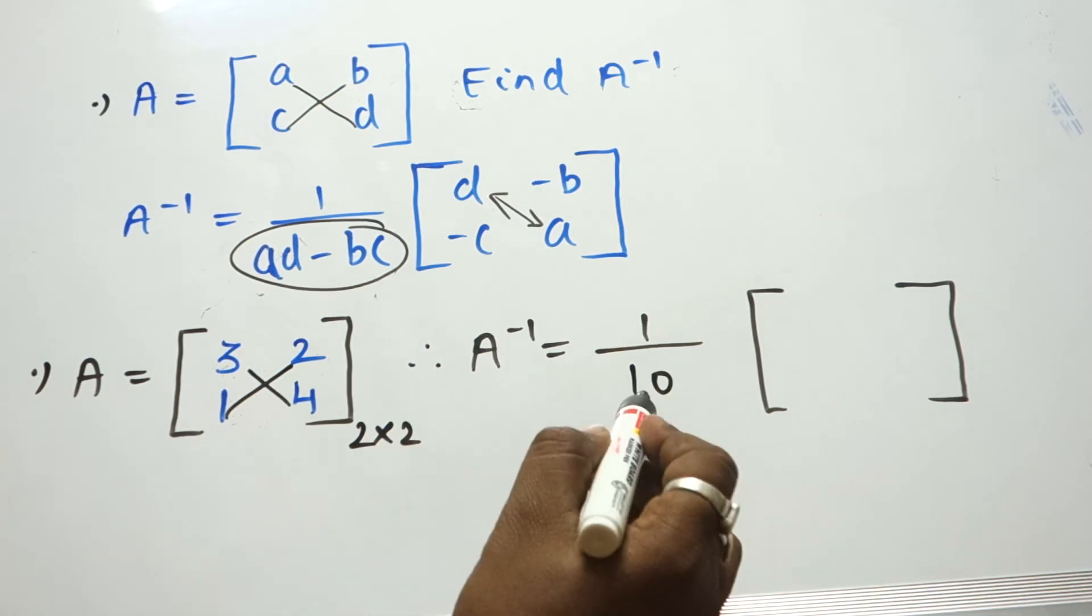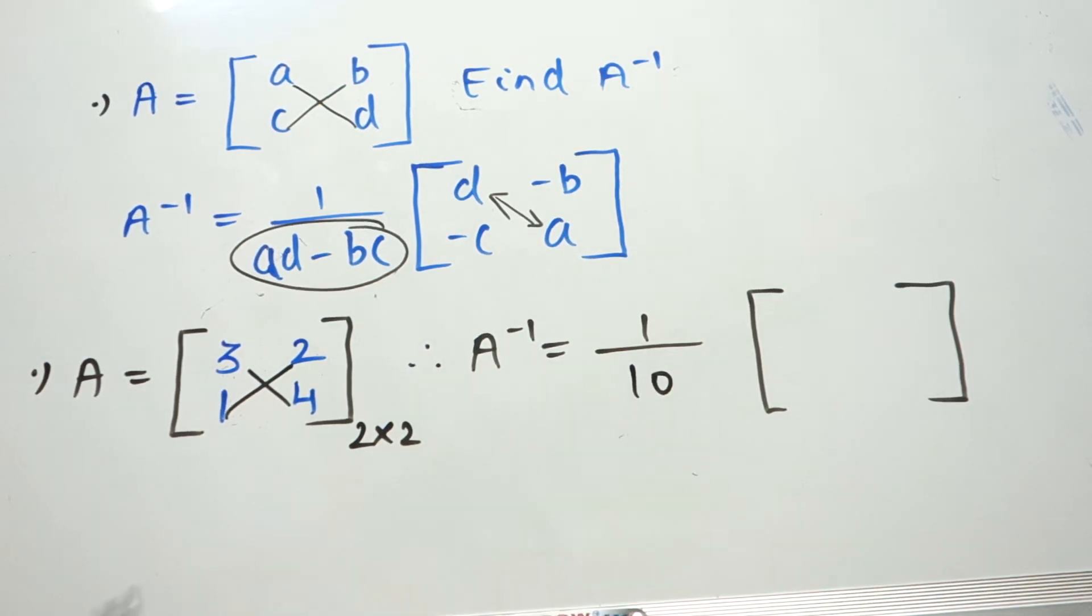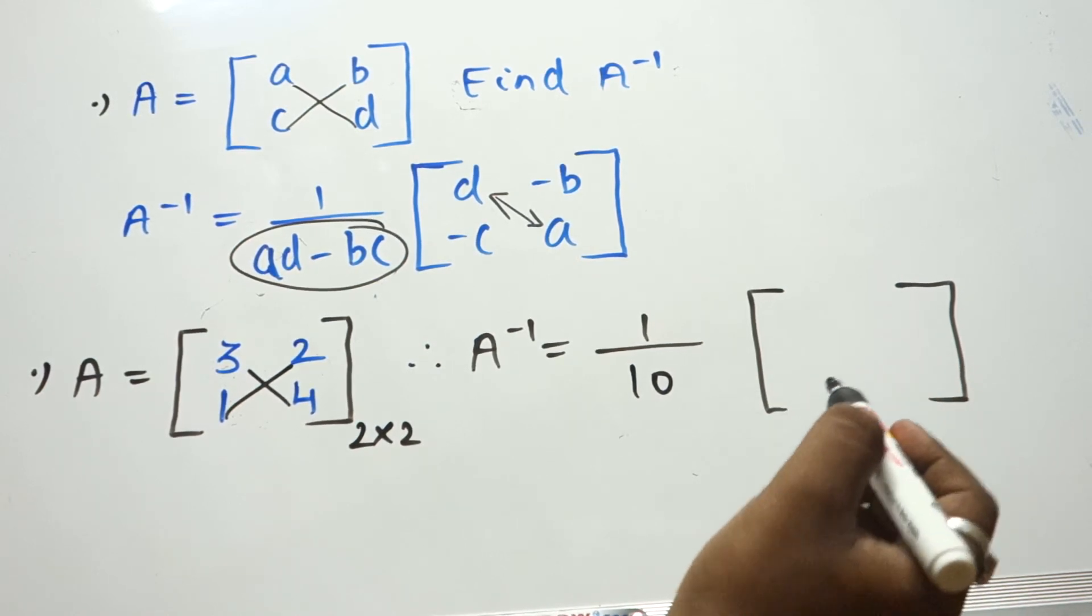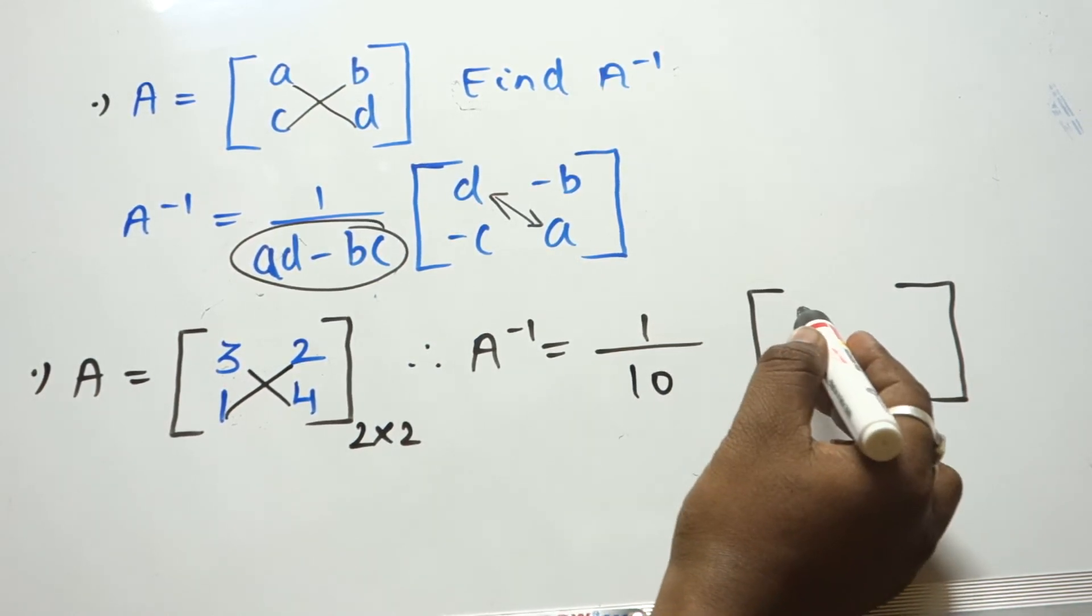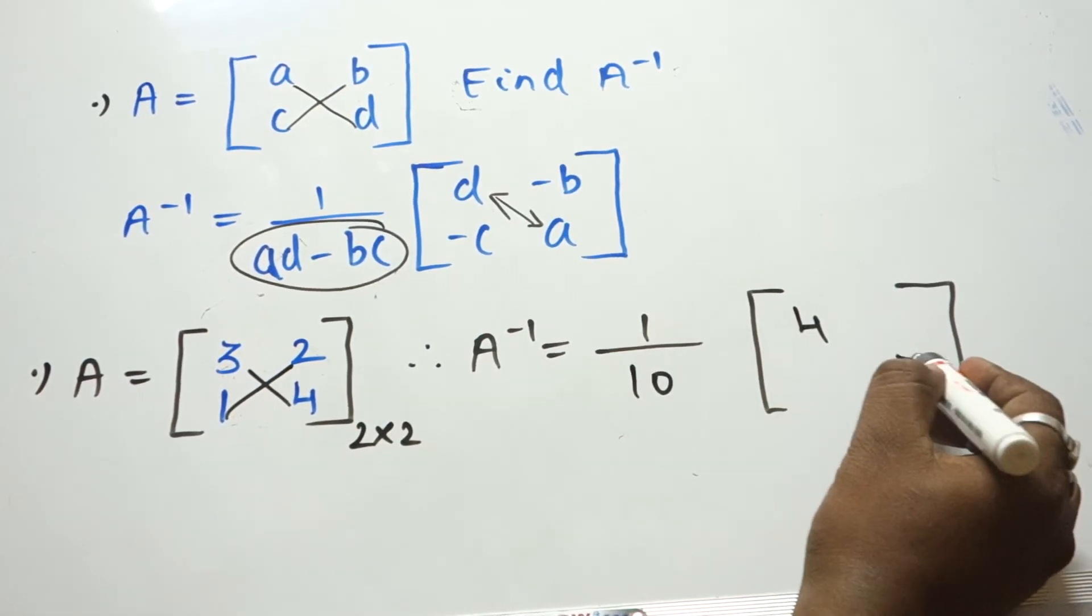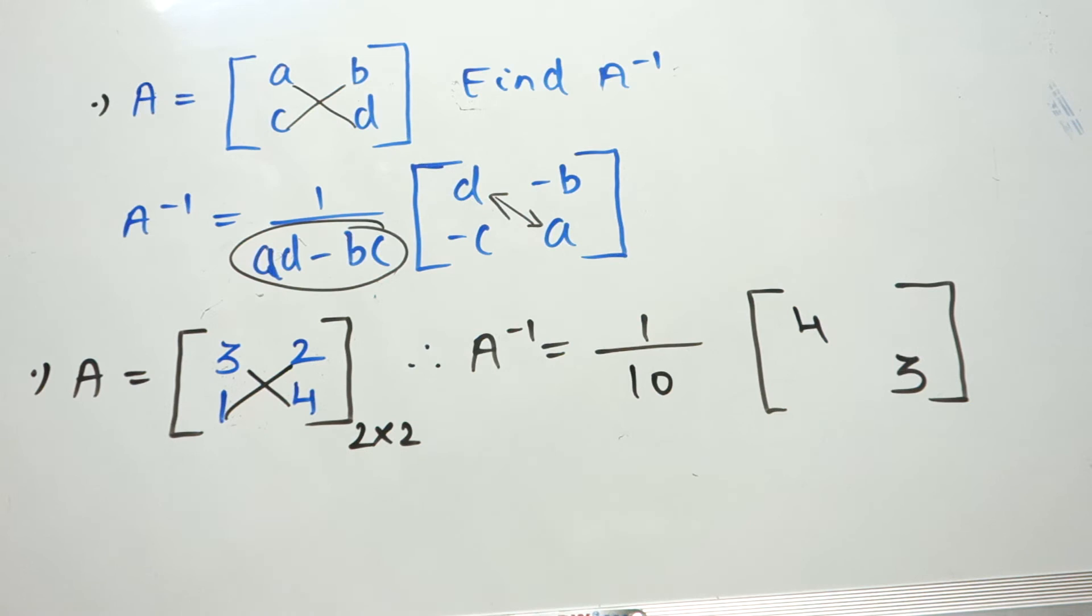This section is the determinant of A. Now see how to find this section. Simply interchange this value, so here it is 3 and 4, so I will write 4, 3.